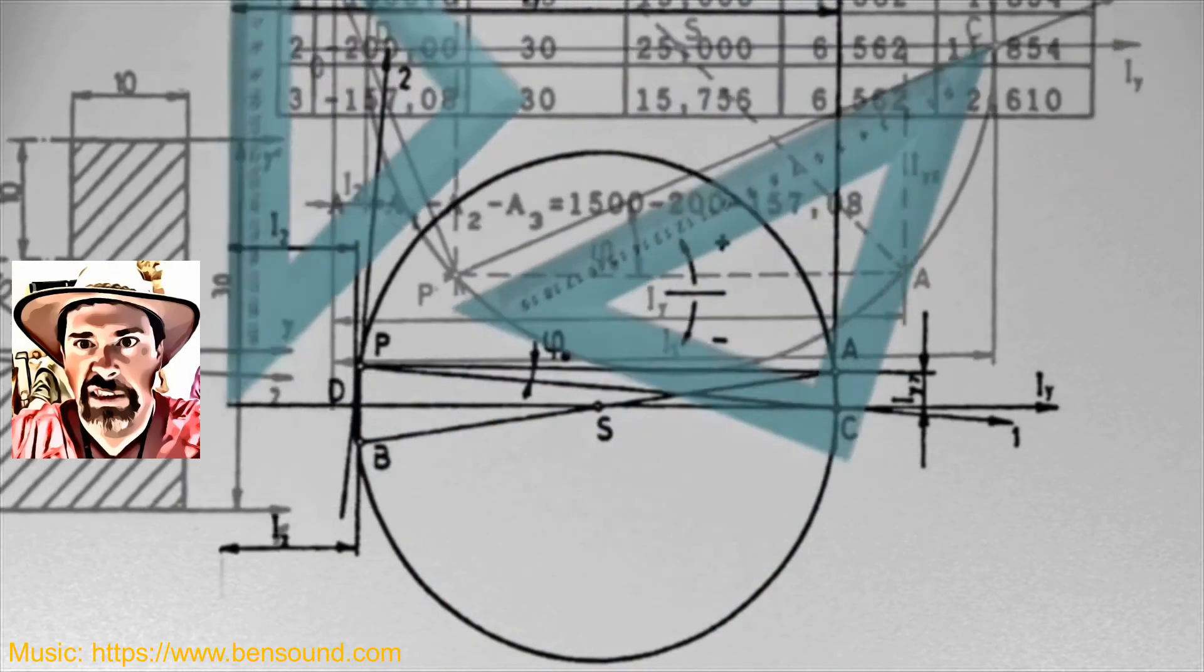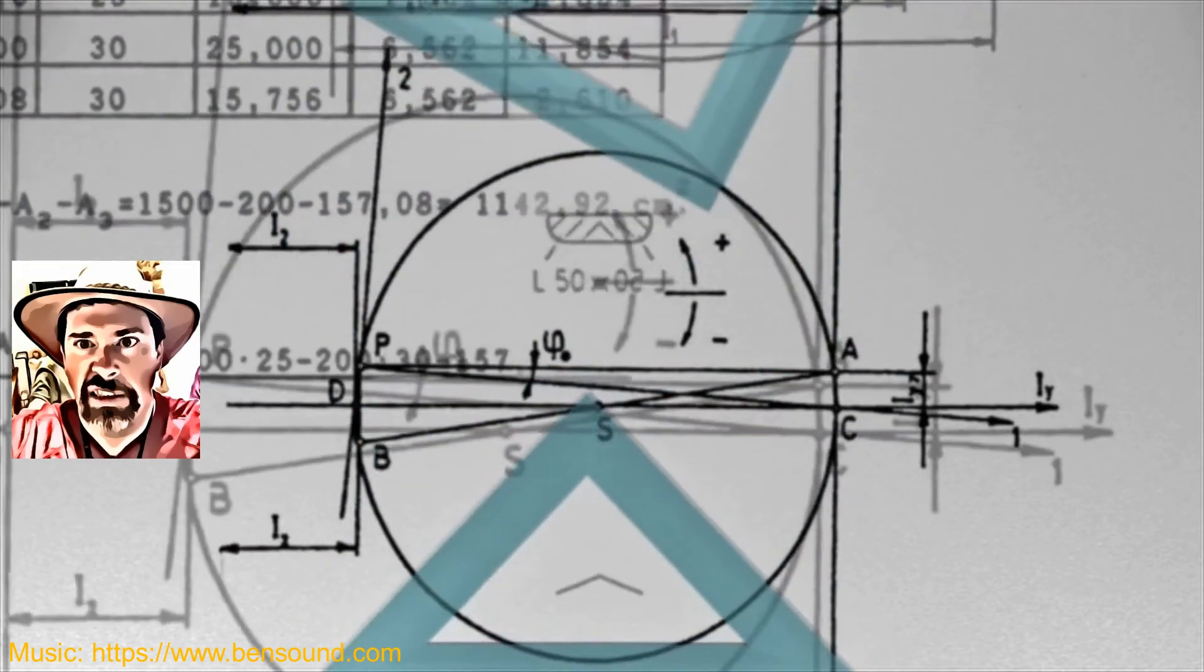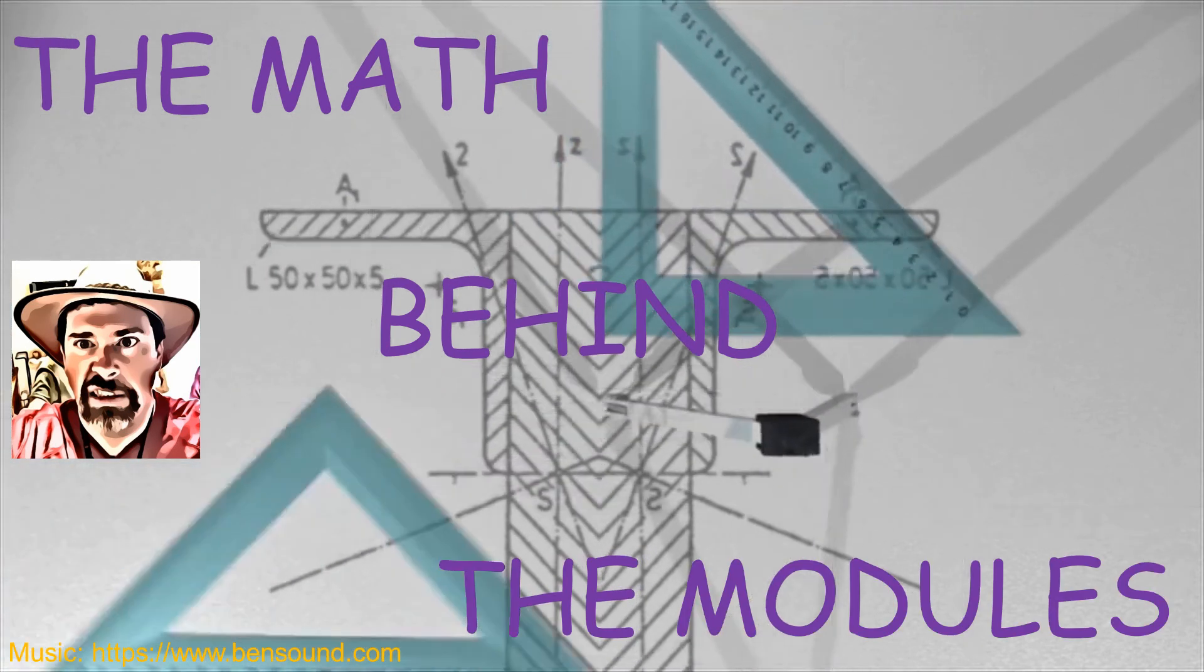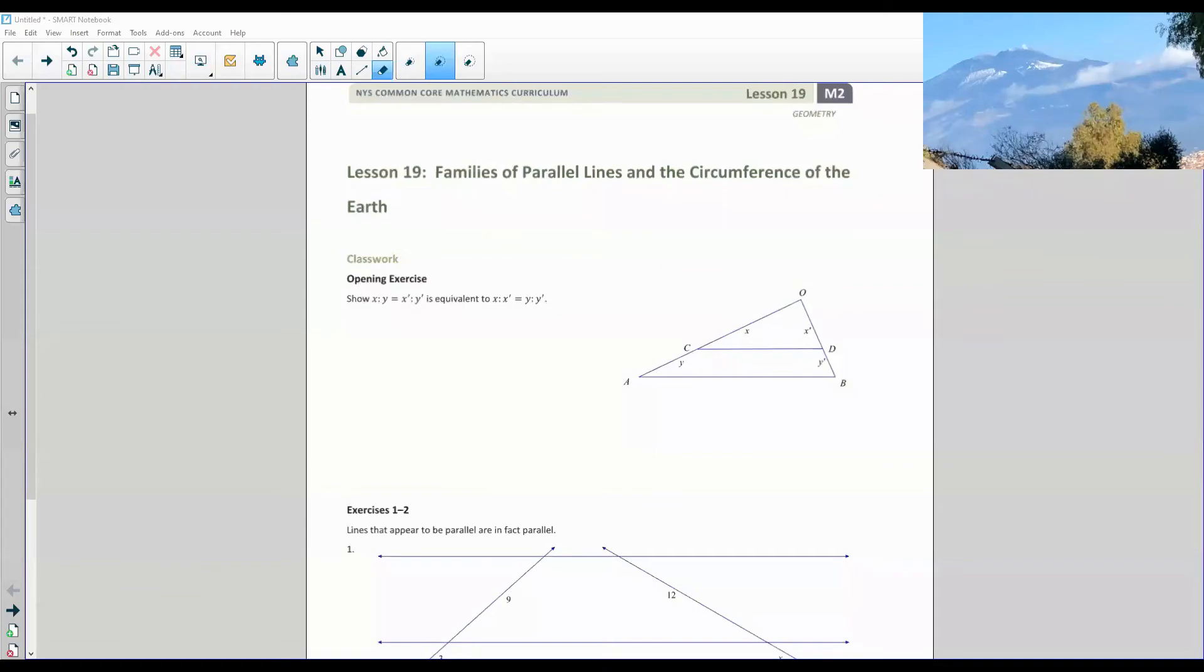Hi there! Mr. Holcomb here with another episode of The Math Behind the Modules. Okay, hello there. Lesson 19: Families of Parallel Lines and the Circumference of the Earth.